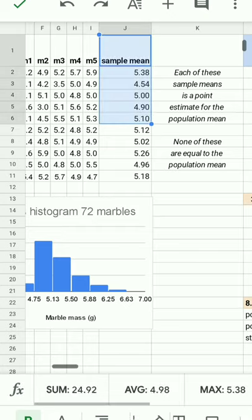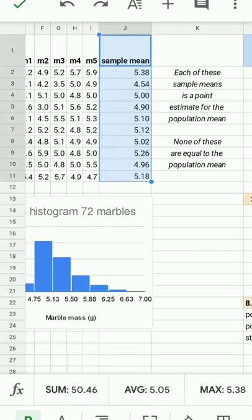You'll notice that none of the population means is 5.2. Each sample mean is a point estimate for the population mean, and none are equal to the population mean. But they are all close to the population mean. And the question I had asked was, what is the shape of the histogram of the sample means?